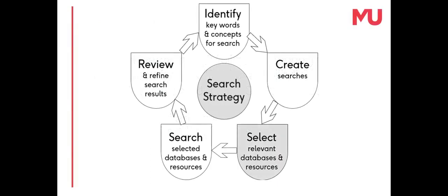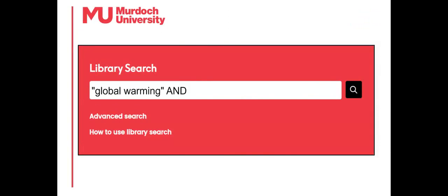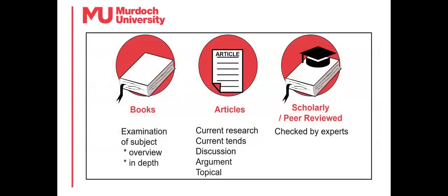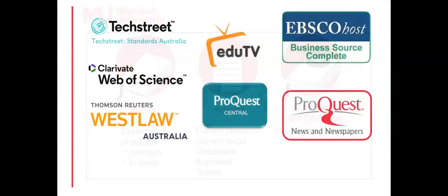After creating search strings, select relevant resources and databases to search. Resources such as library search include books in search results, which give an in-depth and broad examination of a topic, as well as articles that report on current research on a topic.